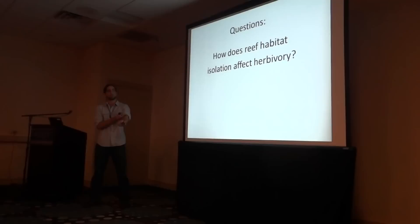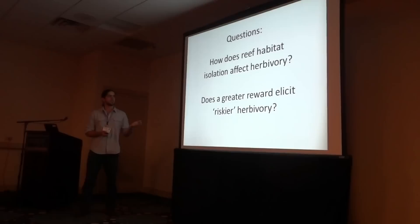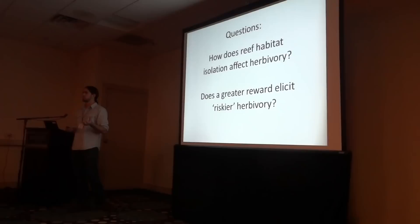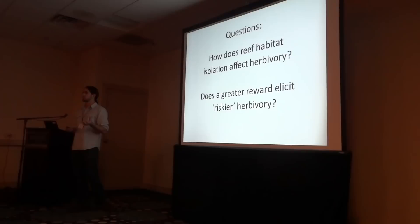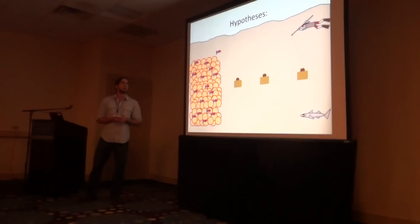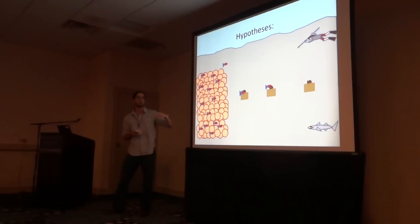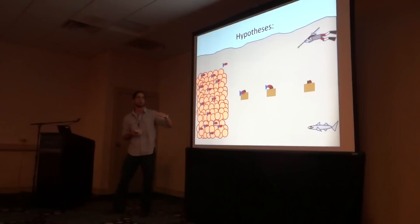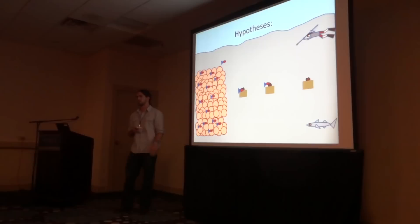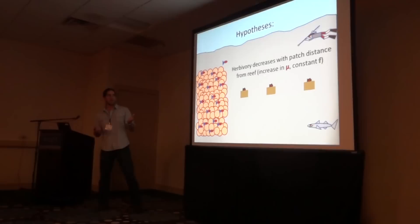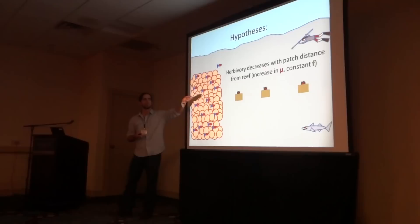That led me to ask the following questions. First, how does reef habitat isolation affect herbivory, given that reef fish are susceptible to predation? And second, does a greater reward elicit riskier herbivory — if we increase the incentive to take risks, do consumers capitalize on that? My first hypothesis was that herbivory decreases with patch distance from reefs: if we increase risk by increasing distance while keeping the reward the same, I would expect herbivory to decrease.